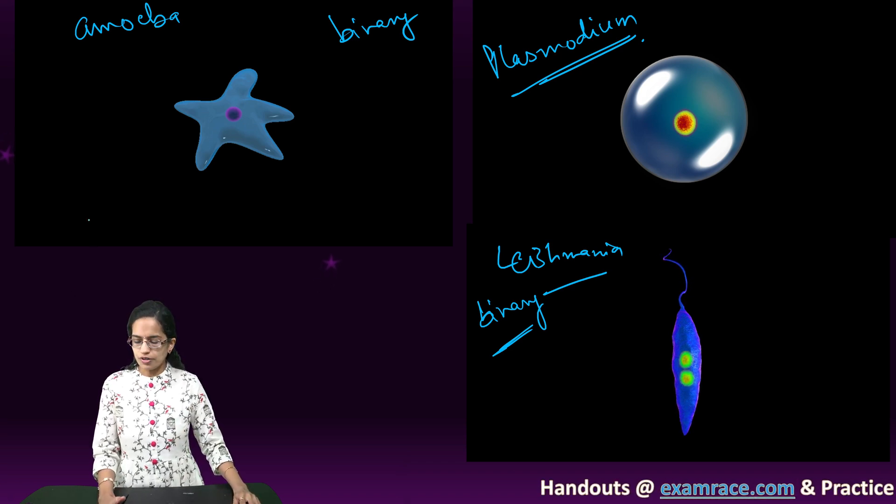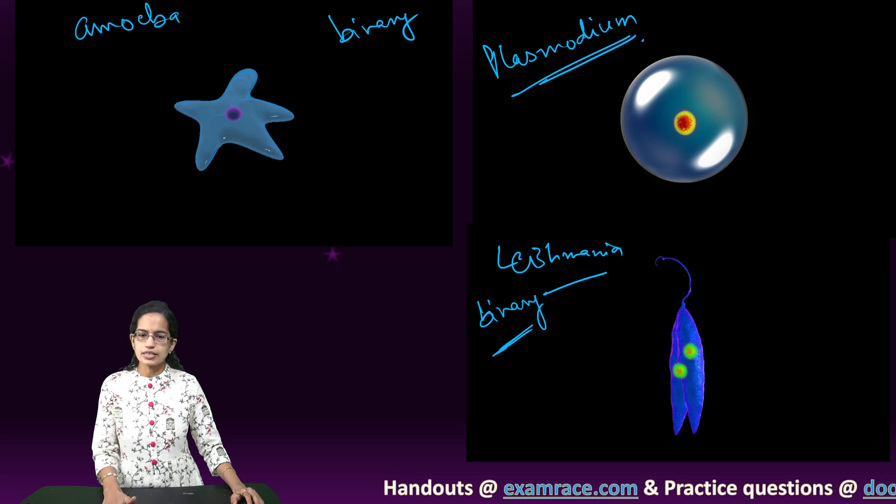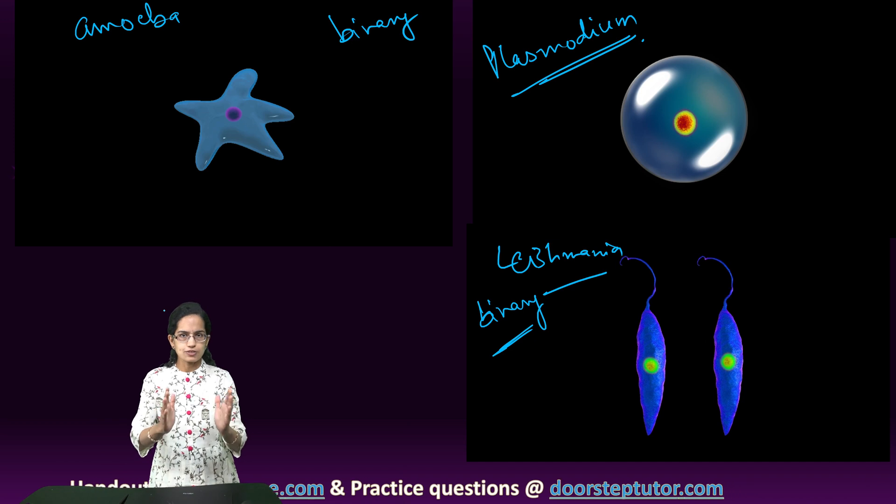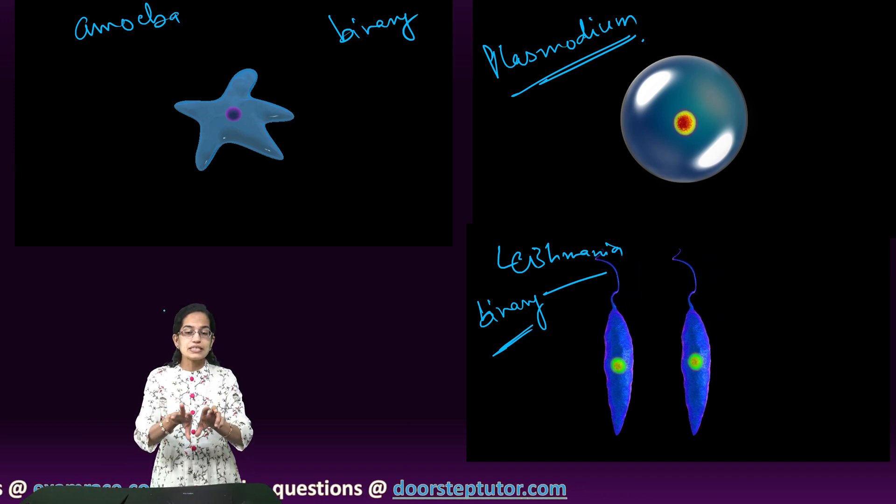So what we are trying to do here is understand the process. As we can see here, leishmania divides into two. Now what happens in a binary fission?